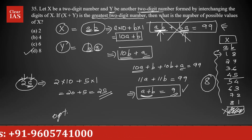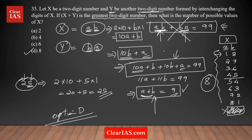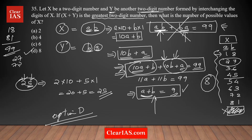So the answer is option D — 8 values are possible. The main important part is forming this equation: 10a + b + 10b + a = 99. If you are able to form this equation, you are done. You can also cross-check: if x is 18, then y is 81, and 18 + 81 = 99. Or take 27: reverse is 72, and 27 + 72 = 99. It will be true for any of the numbers.